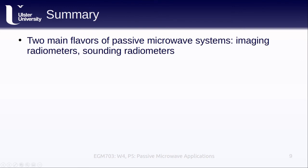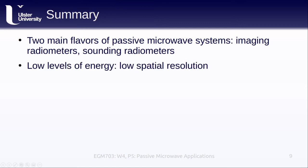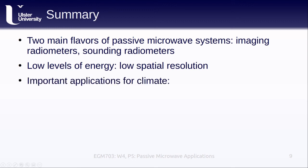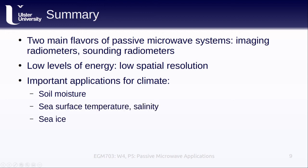In this lesson, we've discussed how we have two main types of passive microwave systems: imaging radiometers and sounding radiometers. Sounding radiometers are primarily used for measuring atmospheric properties, while imaging radiometers are used for a number of different purposes. Because the levels of radiation emitted at microwave wavelengths are very low, these sensors tend to have very low spatial resolution. Despite this, there are a number of important climate applications of passive microwave remote sensing, including soil moisture, sea surface properties, sea ice, and others.